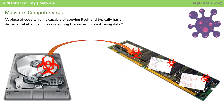The first, and typically the one that most people are aware of, is the computer virus. This is simply a piece of code which is capable of copying itself, and typically it has a detrimental effect such as corrupting the system or destroying data. Computer viruses can be introduced to computer networks and systems accidentally or sometimes on purpose with malicious intent.